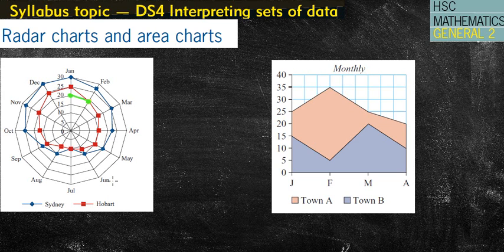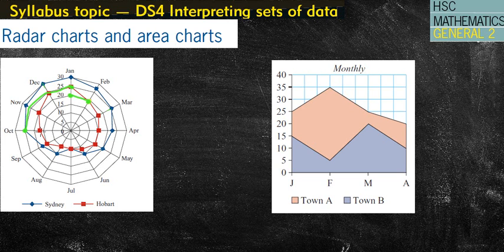If I want to find the temperature in Sydney in October, I go to the blue line for Sydney and go around to October. Again there's no value there so I trace that black line back to the axis, and we can see it's 25 degrees. They might ask which month has the biggest difference between temperatures in Hobart and Sydney — we're looking for the biggest gap between the lines, probably October or November. Or they might ask the difference in January: Sydney is 30 degrees and Hobart is 25, so the difference is five degrees.